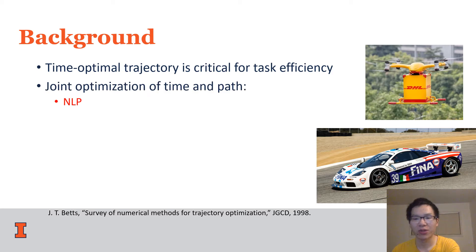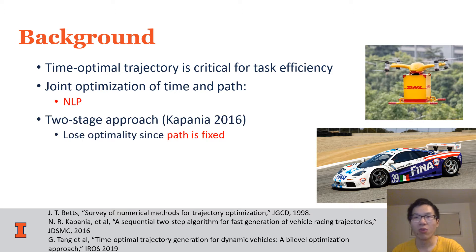One approach is to jointly optimize timing and path, resulting in a non-convex problem. Prior two-stage approach breaks the tie between those two variables, but it also gets suboptimal solutions.